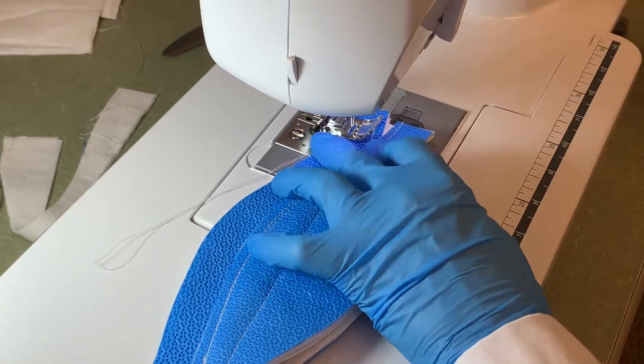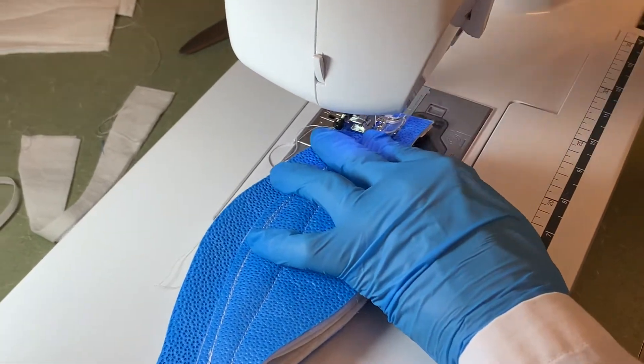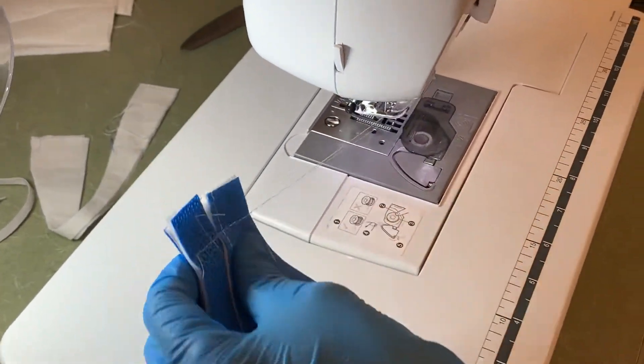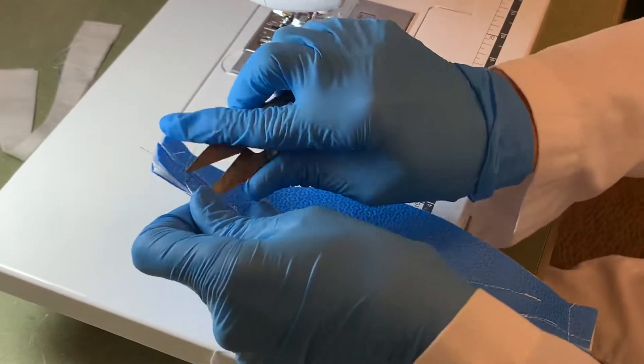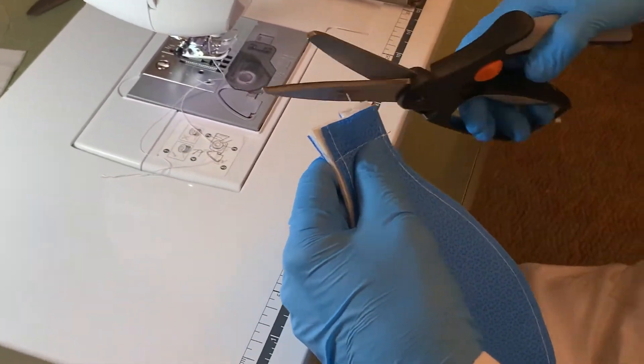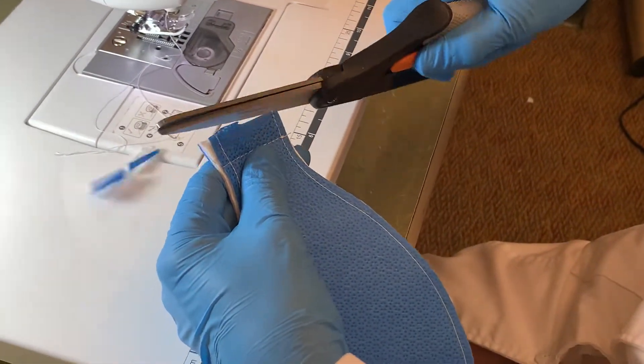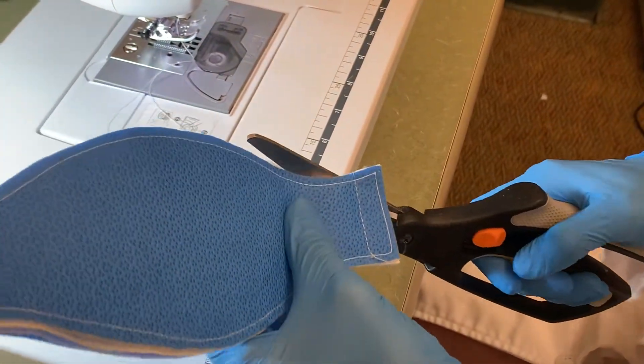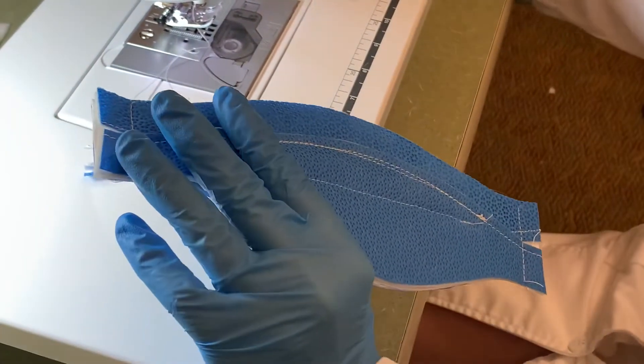Again, sewing at a half inch. Okay, now I'm just going to trim off this excess bit here. And I've got a little excess right here that I'm going to trim off. Just so the edges line up.